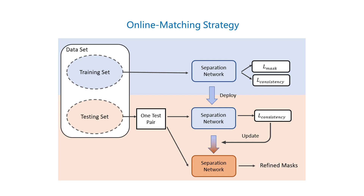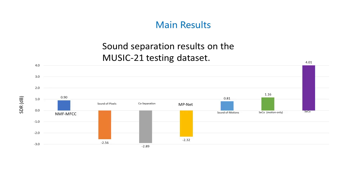Please note that no ground truth masks are required, since we only adopt the consistency loss as the error signal. Finally, let's see the results of our framework. We show the SDR values as it is the most convincing metric. Motion-only Seiko does not adopt the consistency loss and utilizes motion information as visual guidance. Seiko incorporates both the consistency loss and the online matching strategy, which outperforms all baselines by a large margin.